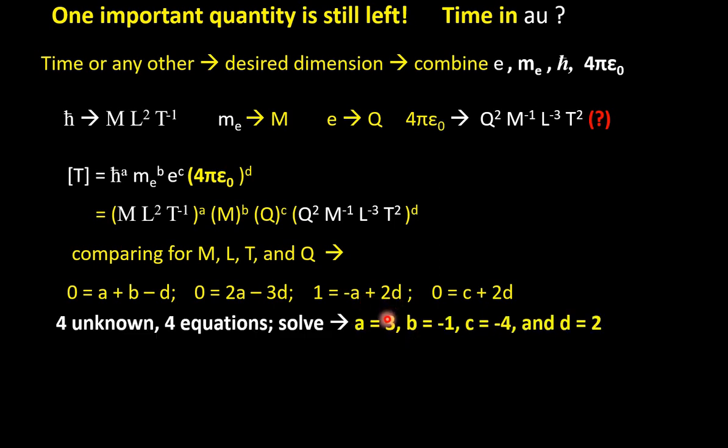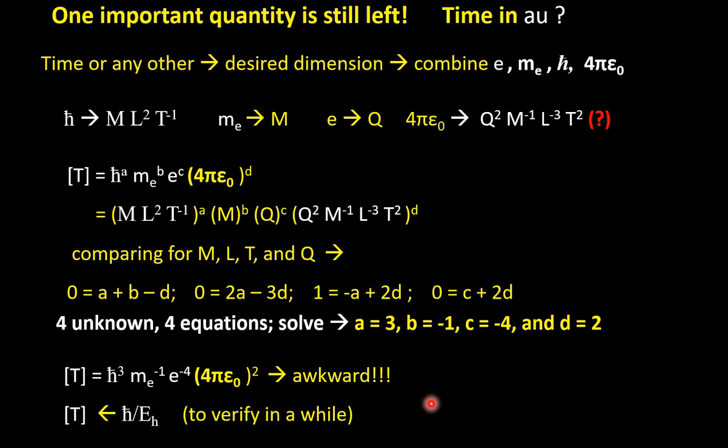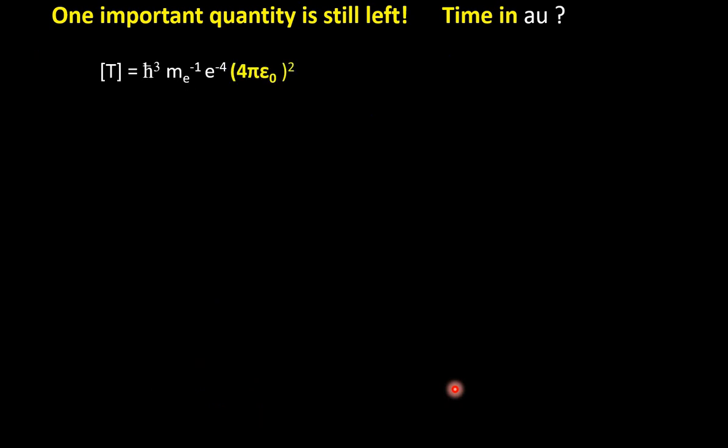Similarly, you get 0 for L and 0 for Q. Only T, left hand side T. So it is 1 and right hand side T is here only and here. So minus A, T to the power minus A, and here 2D. So minus A plus 2D. So what you see that four unknowns A, B, C, D and we have got four equations. So we can easily solve and if solve, we will get A equal to 3, B equals to minus 1, C equals to minus 4 and D equals to 2. So if you put it back here in this expression A, B, C, D, then we get this peculiar or awkward, slightly awkward looking expression for time. Yes, it looks awkward, but we can easily show that T by dimension, it is actually h bar by e_H.